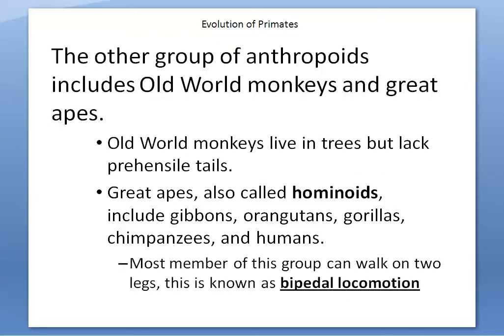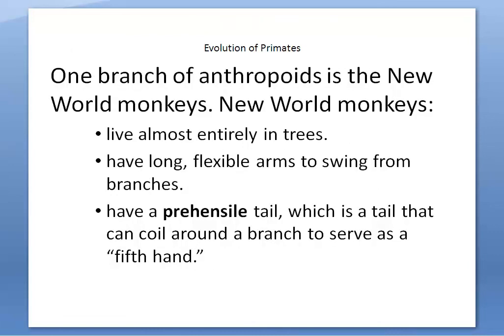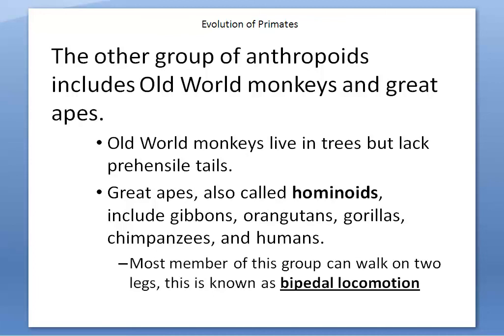Old world monkeys live in trees but lack prehensile tails — that's a key distinction. The great apes, also called hominoids, include gibbons, orangutans, gorillas, chimpanzees, and also humans, because humans actually share a lot of the same DNA as chimpanzees and gorillas. So when you go to the zoo and see orangutans, gorillas, and chimps, you cannot call them monkeys because they are not monkeys. A monkey has a prehensile tail, whereas apes do not — it's Planet of the Apes for a reason.